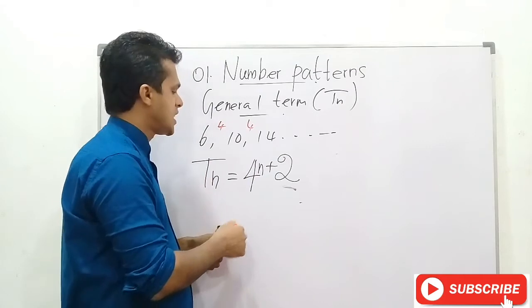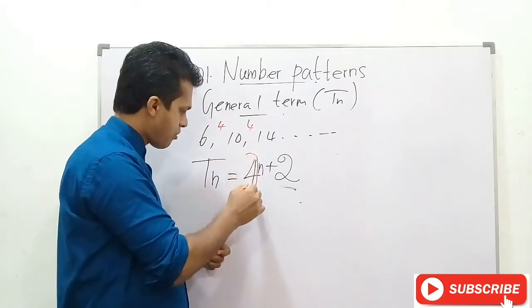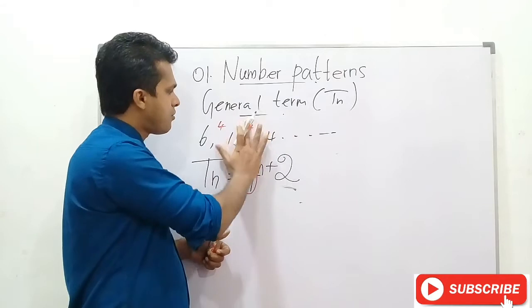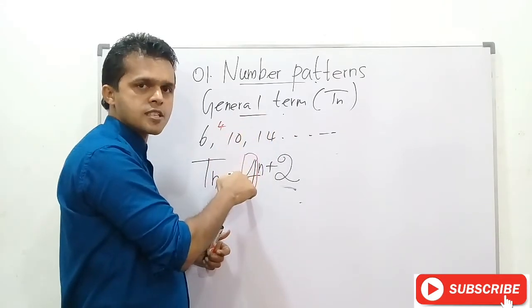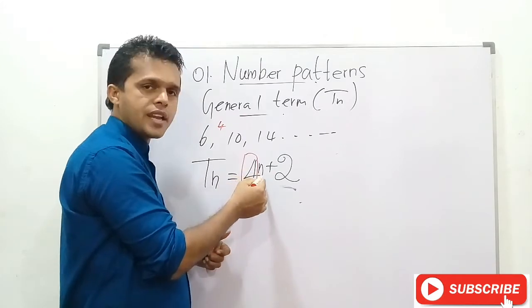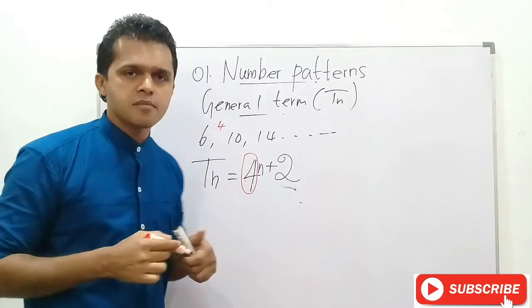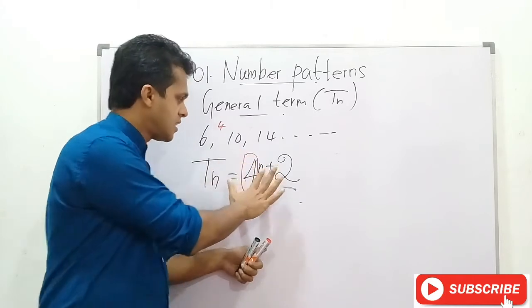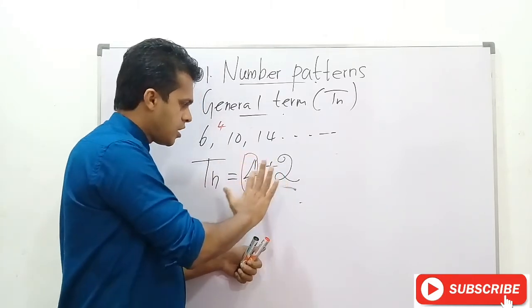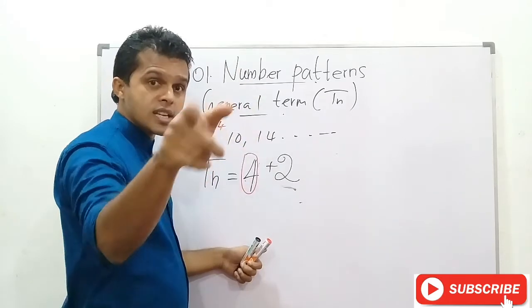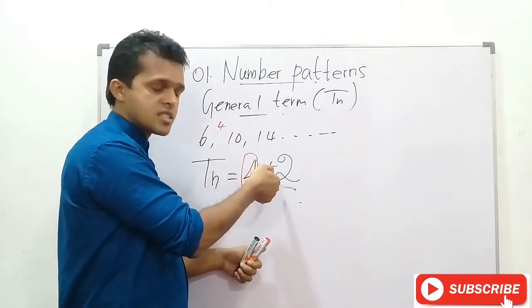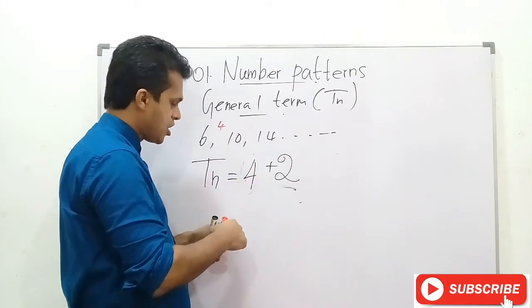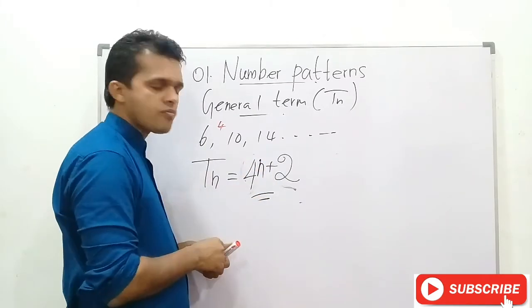The 4 is the common difference of this number pattern. Simple N must be written every time. So that you can take 6 as the first term, you write the digit 2. Therefore, the general term of this number pattern is TN equals 4N plus 2.